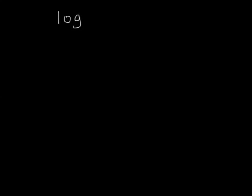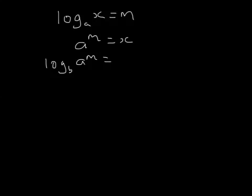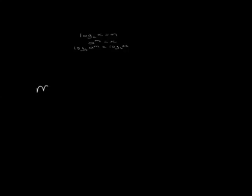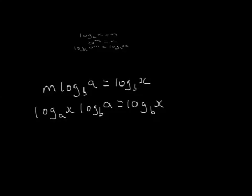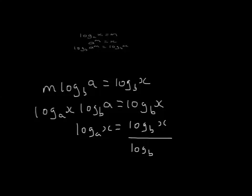Let's say log to the base a of x equals m, so a to the power m equals x. Now let's take logs of both sides, but this time to the base b. The power m comes outside, giving m times log to the base b of a equals log to the base b of x. Since m is log to the base a of x, we get: log to the base a of x equals log to the base b of x divided by log to the base b of a. This is the important change of base rule.